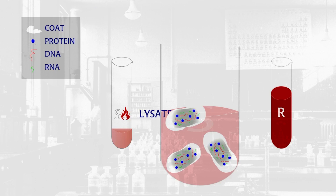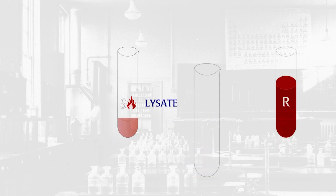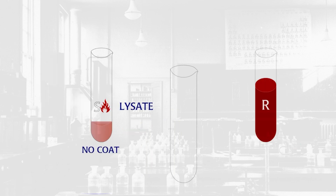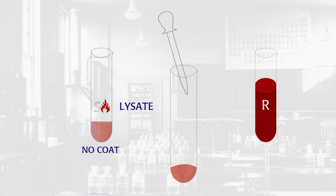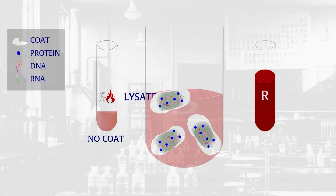They tested each of the lysates' components for the transforming activity. First, they incubated the heat-killed S-lysates with an enzyme that completely chewed up the sugar coat. They tested the transforming ability of the sugarcoatless S-lysates. The sugarcoatless S-lysates were still able to transform. This indicated that the R-strain was not just assembling a new S-strain sugar coat from the pieces.